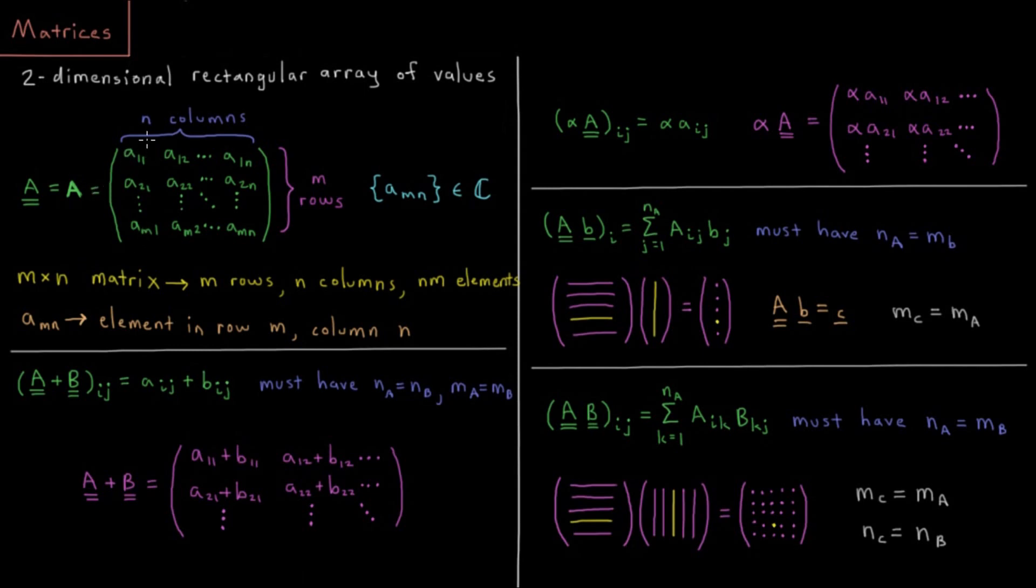That's equal to a bunch of elements. Each of these elements is just some, in general, complex number. More typically it's going to be just any real number.